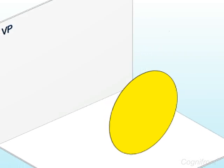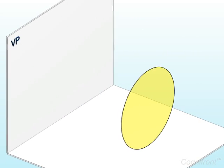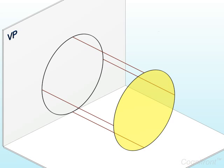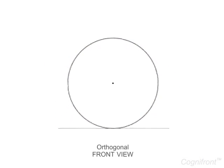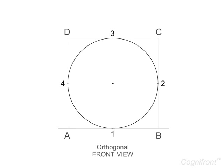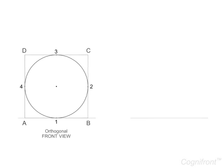Consider a circular lamina which is positioned on HP with its surface parallel to VP. Observe that it displays its true shape and size in orthogonal front view. Now enclose the lamina in a square box ABCD, then mark the midpoints 1, 2, 3, 4 of the sides of the box.